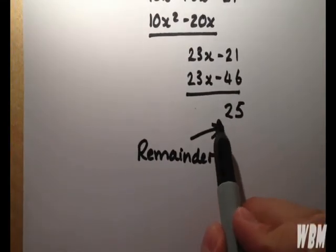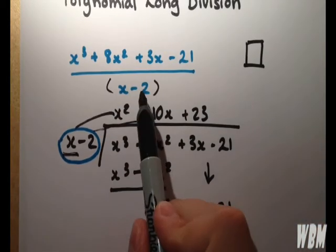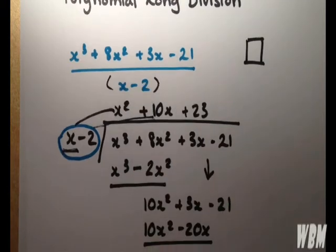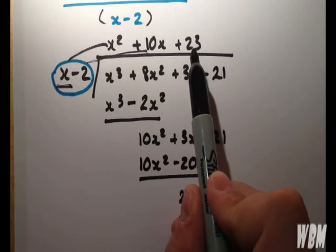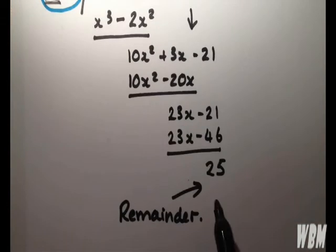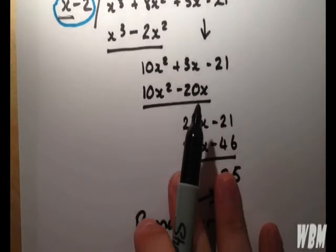So, with the remainder, you simply stick it on top of the original denominator. So, we write out x squared plus 10x plus 23 plus 25 over x minus 2, just like this.